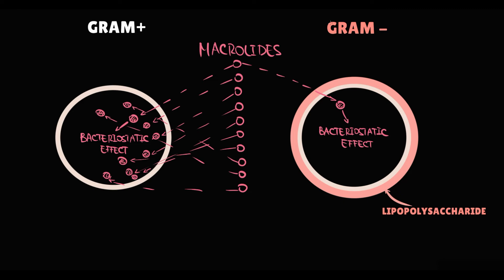But gram-negative bacteria, in contrast to gram-positive bacteria, have a lipopolysaccharide layer. And for macrolides, it's very hard to squeeze through this lipopolysaccharide wall. So gram-positive bacteria are more permeable to macrolides, and thereby much more vulnerable.